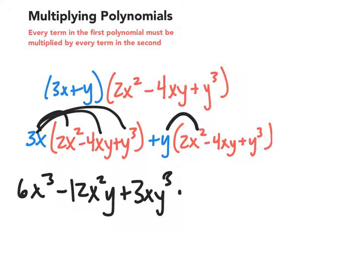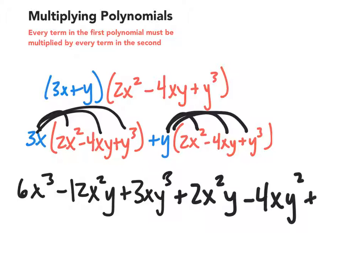Positive y times 2x squared is 2x squared y. And I like to go in alphabetical order. Y times negative 4xy is negative 4xy squared. And then y times y cubed is y to the fourth.